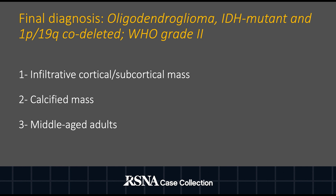The final pathology revealed an oligodendroglioma, IDH mutant, 1p19q codeleted, WHO grade 2. The key diagnostic features of this case were the cortical-subcortical infiltrative pattern of growth, the presence of coarse calcifications, and the patient's young age.